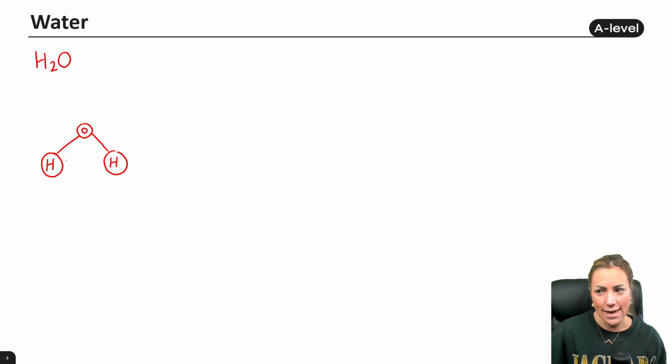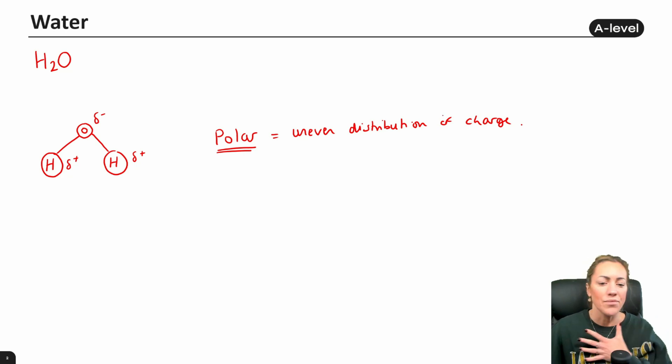Now what we should know for A-level biology is that the hydrogen atoms are slightly positively charged. We call this delta positive. They don't have a full positive charge, they are slightly positively charged and the oxygen is slightly negatively charged or delta negative. This is because the electrons are pulled slightly closer to the oxygen which gives it that slightly more negative charge. Because of this we say that water is polar which basically means there is an uneven distribution of charge which you can see on the diagram and this feature or property gives water all of its other properties, the fact that water is polar.